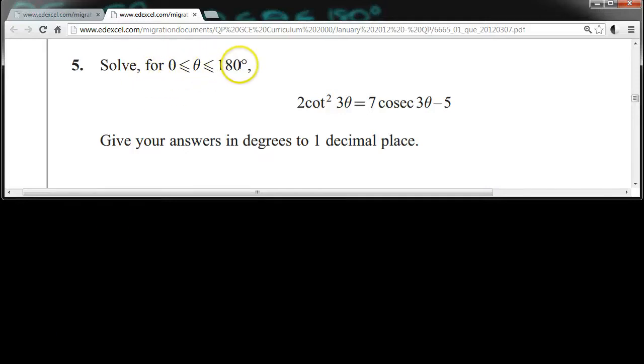Solve for theta between 0 and 180 degrees, the equation 2 cot squared 3 theta equals 7 cosec 3 theta minus 5, giving your answers in degrees to one decimal place.